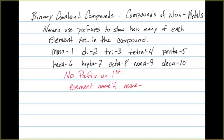Now, one of the things we're going to see is that we do not include a prefix on the first element in a compound if that first element is going to have mono. Any other number, we will include a prefix on the very first element in the name, but if it is going to only have one atom and the prefix would be mono, we're just going to leave it off.